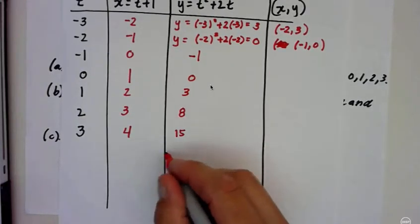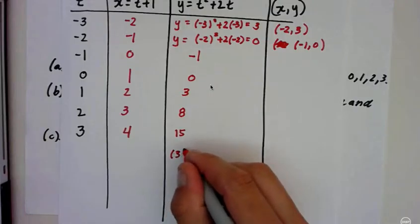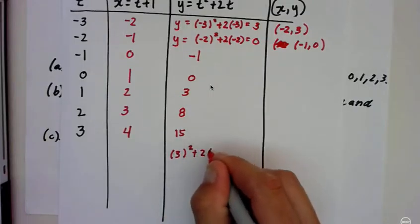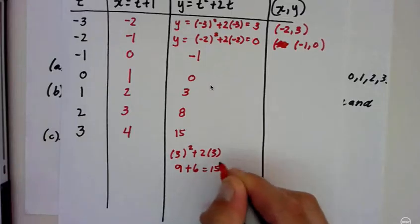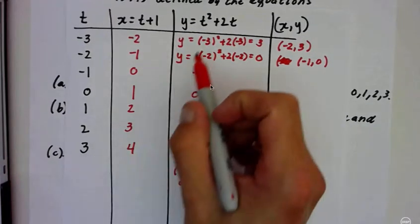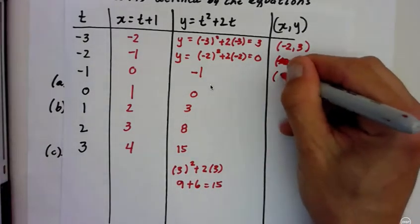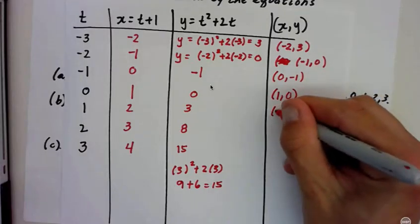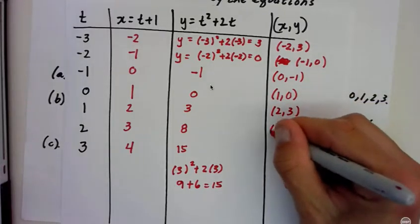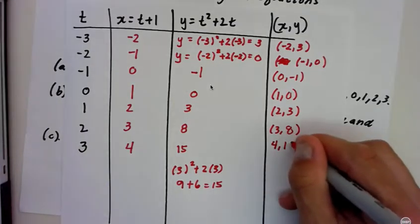Those are the values. And if you want to see one more, like let's look at three down here. For this last one, it's three squared plus two times three. So that's nine plus six, which is 15. So you're just plugging in your t value in for these and simplifying. So let's write our order pairs. Zero, negative one, one, zero, two, three, three, eight, four, and 15.